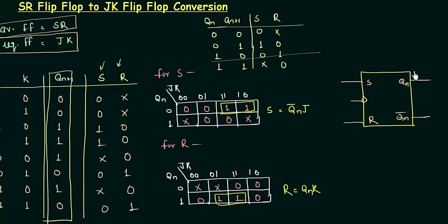So QN complement I will take from here, and it is the AND combination of QN complement and J, so I will use an AND gate here. And one of the inputs to this AND gate is J, and the other input is of course QN complement that we have taken out. So we are done with our S. We have to do these changes.